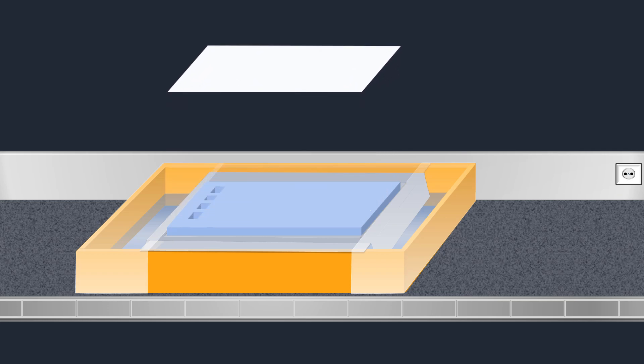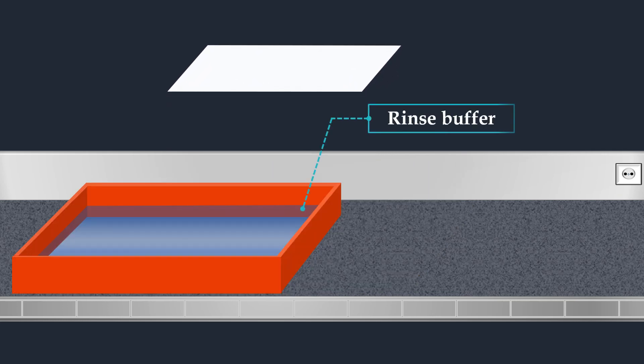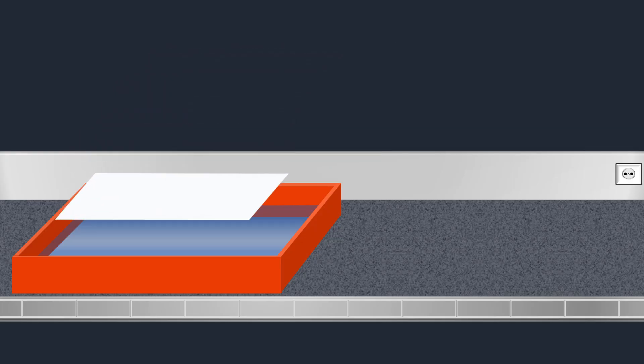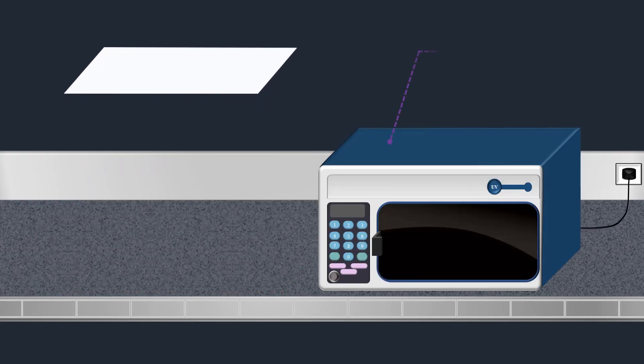Next, the membrane is briefly rinsed to remove any agarose that may be stuck during the transfer. Then it is exposed to ultraviolet radiation to permanently attach the transferred RNA to the membrane.